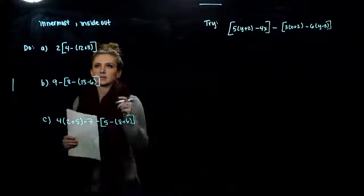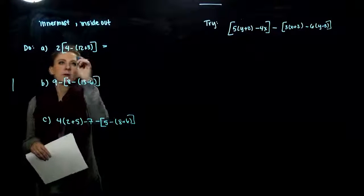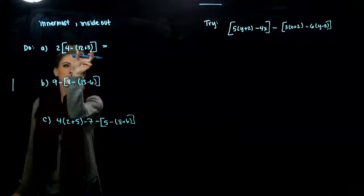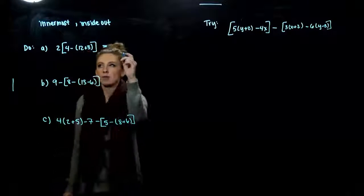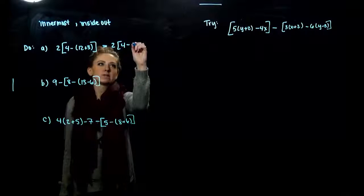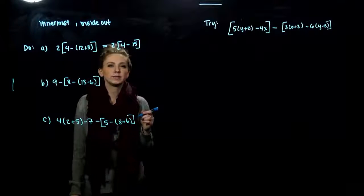So let's practice. That first example, we need to work on the innermost grouping. So we need to add 12 and 3 together first. So 12 plus 3 gives me 15. Got rid of one set of my parentheses.